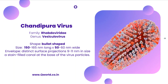Chandipura virus belongs to the family Rhabdoviridae and the genus Vesiculovirus. It is the same family from which the rabies virus comes. Similar to rabies, this is also a bullet-shaped virus with a size of 150 nanometers in length and 50 nanometers in width. It is an enveloped virus with projections of 9 to 11 nanometers on its surface.